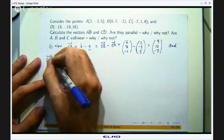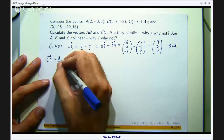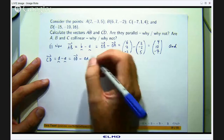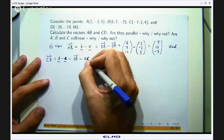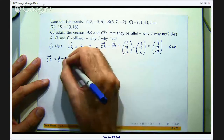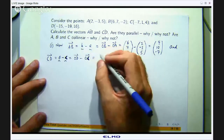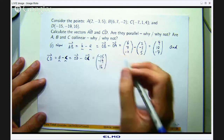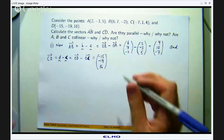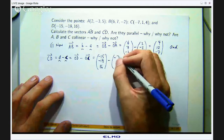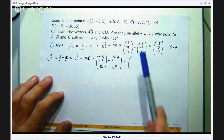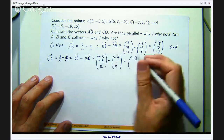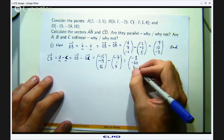Let us work out the vector CD, the vector from the point C to the point D. Again, depending on what notation you use, you would come up with something like D minus C. Let us write that as a column vector and do the component-wise operations just like we did above. So negative 15 minus negative 7 is negative 8, negative 19 minus 1 is negative 20, and 16 minus 4 gives 12.